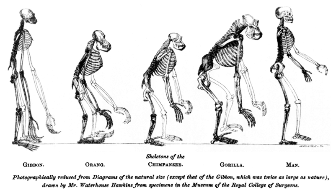Evolutionary ecology mostly considers two things: how interactions both among species and between species in their physical environment shape species through selection and adaptation, and the consequences of the resulting evolutionary change.